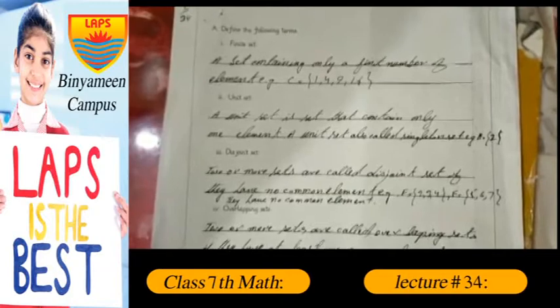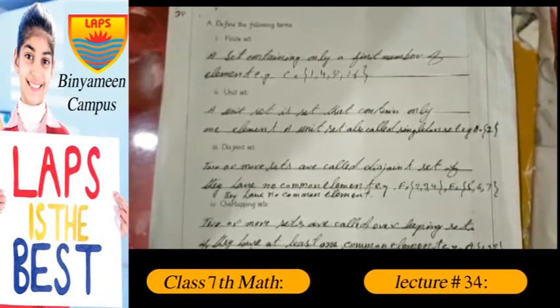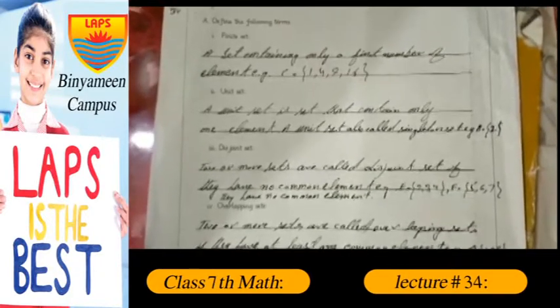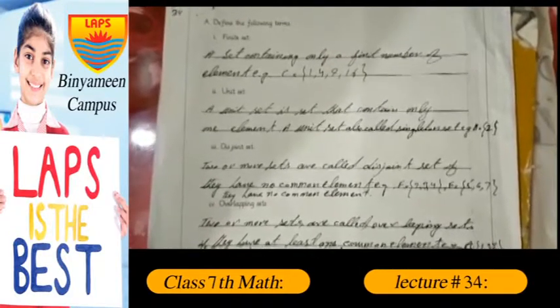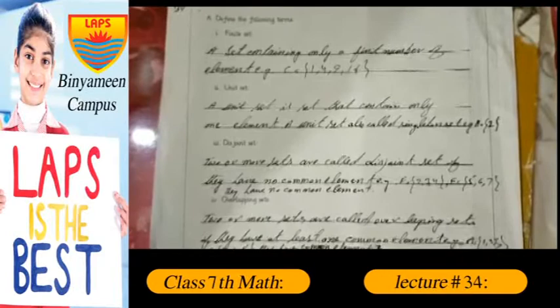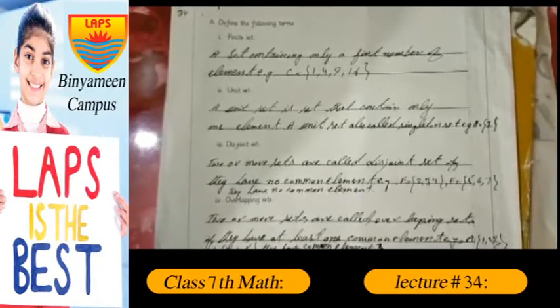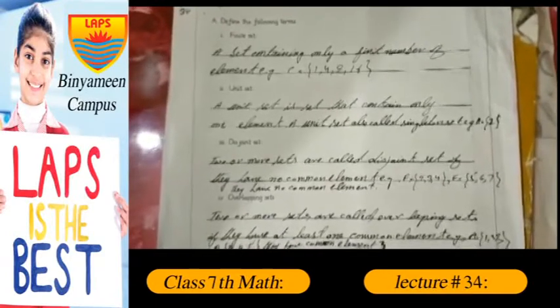Assalamu alaikum, my name is Naima Bas, I'm your math teacher. Today I deliver lecture from page number 14. Finite set: a set containing only finite numbers of elements. For example, set C equals {1, 4, 9, 16}.